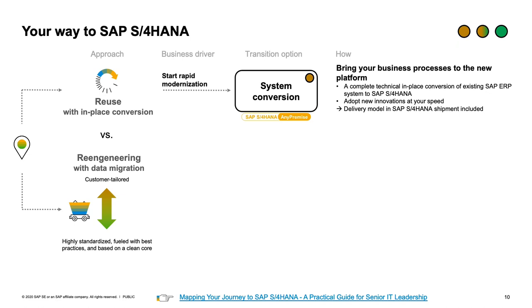The system conversion — the brownfield approach — is a complete technical in-place conversion of the existing SAP ERP system into SAP S/4HANA, available only for the any-premise deployment. It brings your business processes as they are to the new platform, and you can adopt new innovations at your own speed afterward — either a phased approach doing the technical uplift first, or in one step. There is no extra fee or extra license for this approach or its related tooling, as it is included in the SAP S/4HANA shipment.